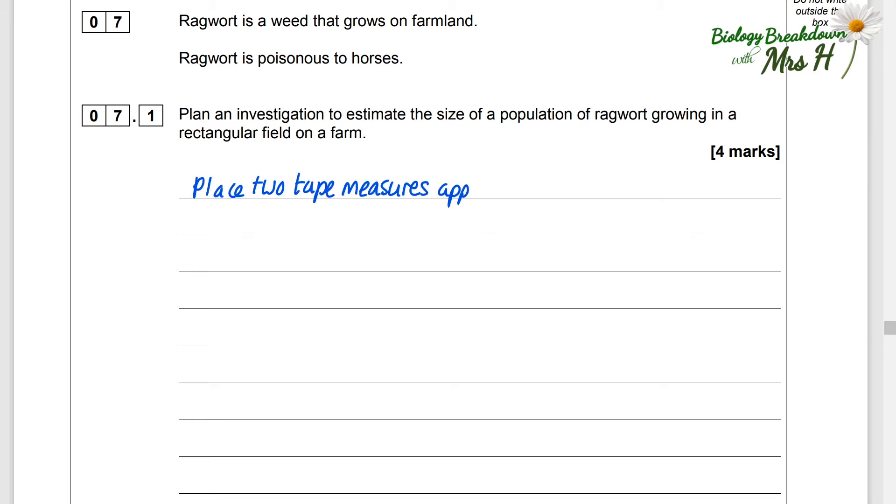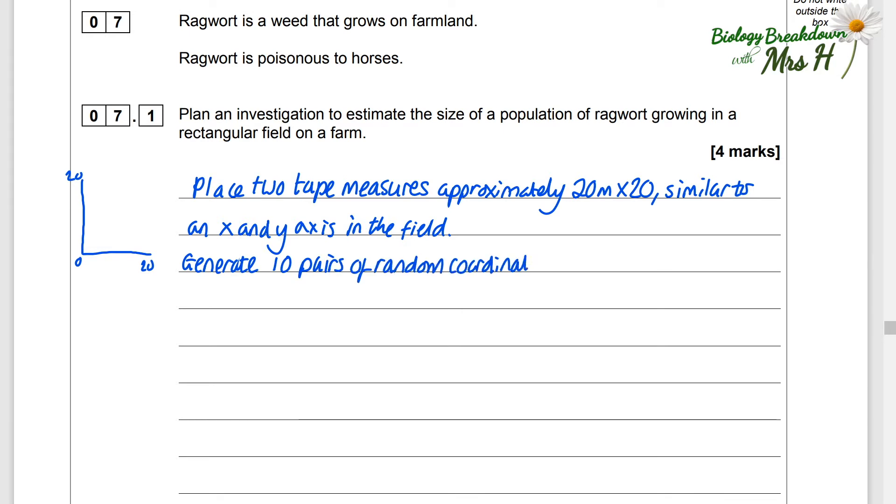Place two tape measures at approximately 20 meters by 20 meters similar to an x and a y axis in the field. Generate 10 pairs of random coordinates using a computer program. You could just google computer program random generator. There are loads there. Each number needs to be between 0 and 20.